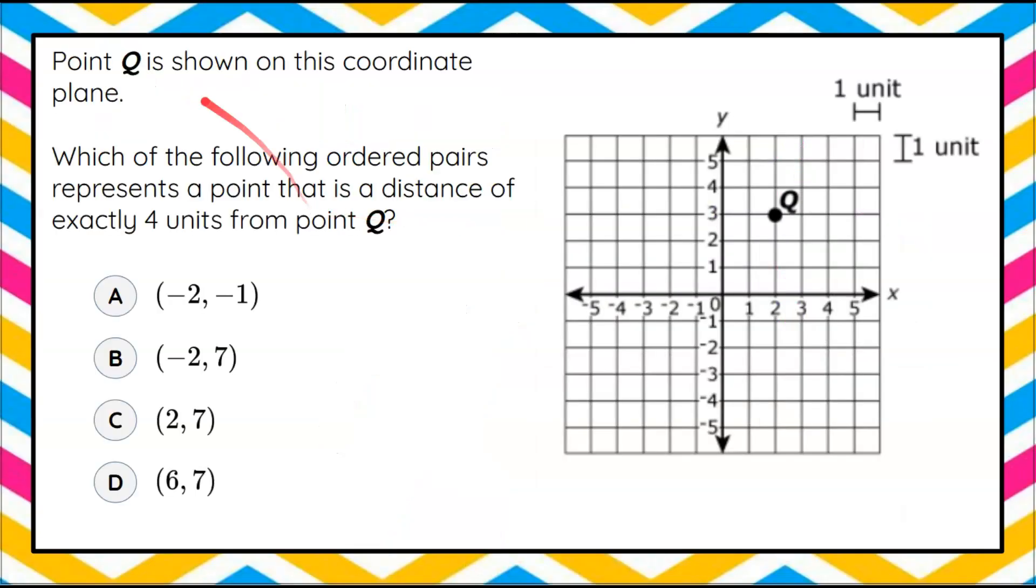Here's our question today. We're told that point Q is shown on this coordinate plane. Here's the coordinate plane and point Q. We're asked which of the following ordered pairs represents a point that is a distance of exactly four units from point Q. Here's where I'd like you to pause the video, do your best work, and then come back to see mine.